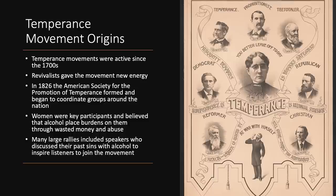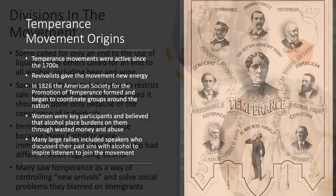In 1826, the American Society for the Promotion of Temperance formed and began to coordinate groups around the nation. Women were key participants in the temperance movement. They believed the use of alcohol placed burdens on them — that husbands wasted money families needed on alcohol, and that drunken husbands abused their wives and children. Large rallies featured speakers discussing their past sins with alcohol to inspire listeners to join the movement.